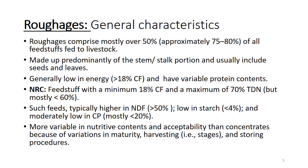According to the NRC definition, feedstuffs with a minimum of 18 percent crude fiber and a maximum of 70 percent TDN — but mostly less than 60 percent TDN — are considered roughages. Such feedstuffs are typically higher in neutral detergent fiber, mainly above 50 percent; they are low in starch, less than four percent; and moderately low in crude protein, mostly less than 20 percent. They are more variable in nutritive content and acceptability than concentrates, because of variation in maturity, harvesting, and storing procedures.